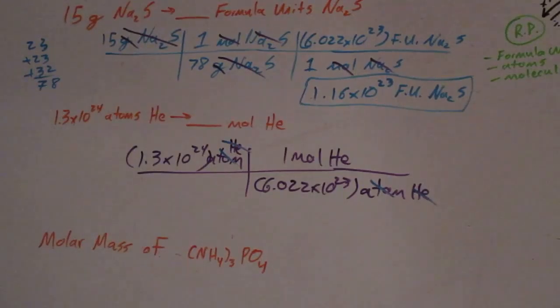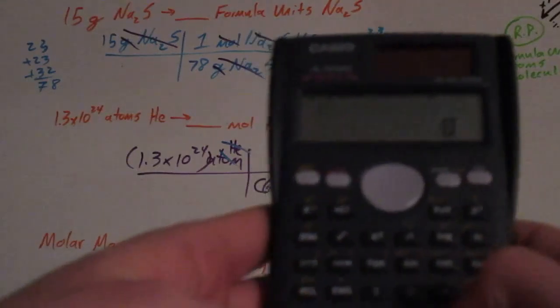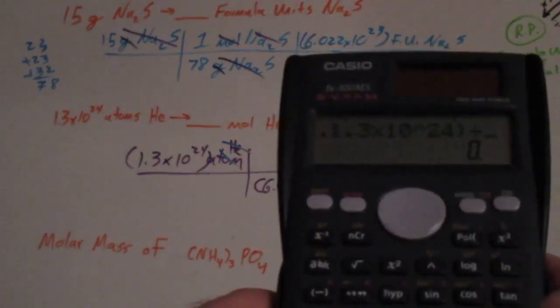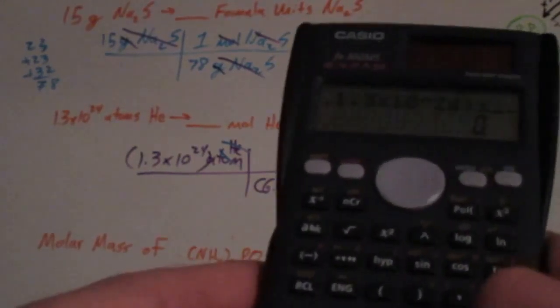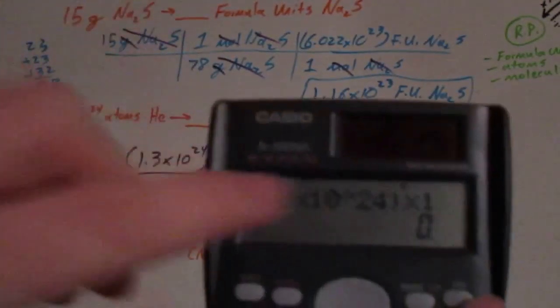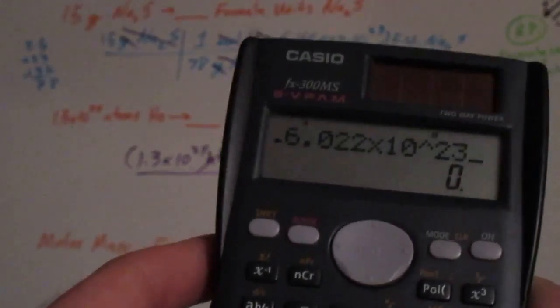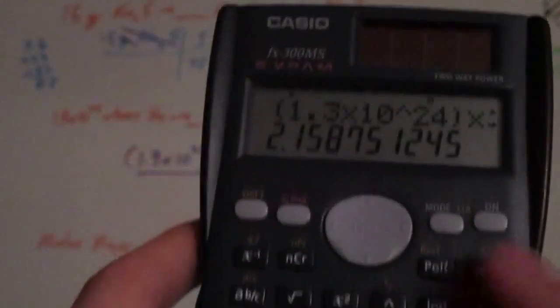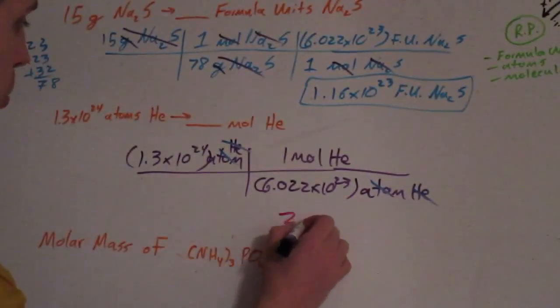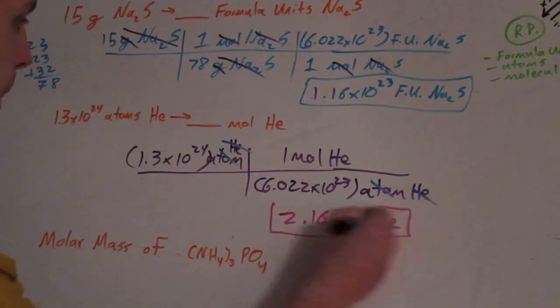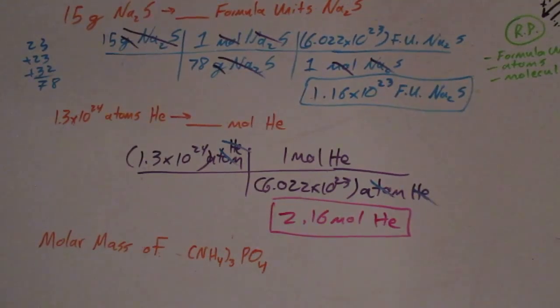Plugging into the calculator: parenthesis 1.3 times 10 to the 24th, end parenthesis, times 1, divided by parenthesis 6.022 times 10 to the 23rd, end parenthesis, enter. I got 2.16 moles. So this answer is 2.16 moles of He. The units always cancel out with each other, which is really nice.